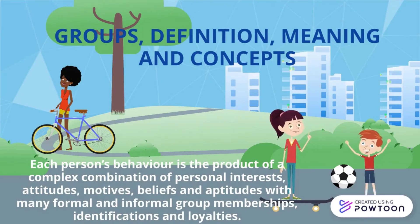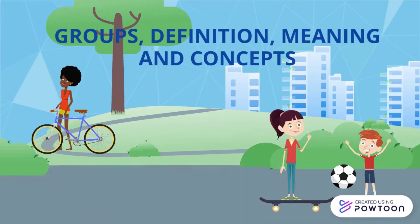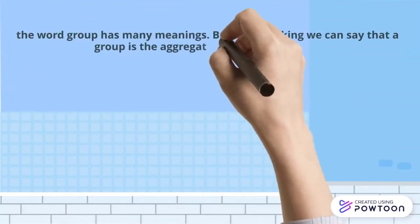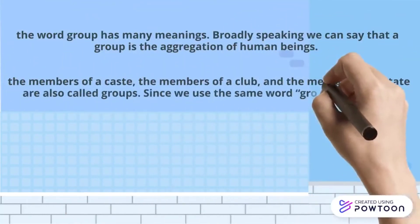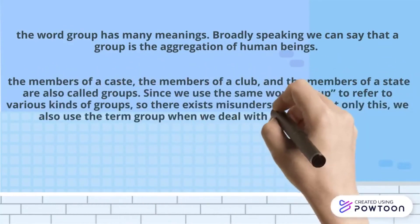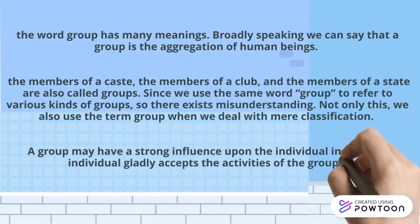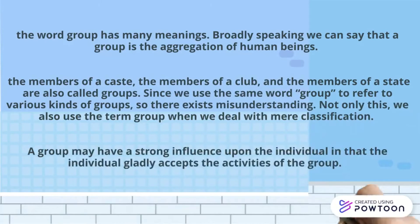Behavior is the product of a complex combination of personal interests, attitudes, motives, beliefs, and aptitudes, along with many formal and informal group memberships, identification, and loyalty. The word 'group' has many meanings. Broadly speaking, a group is the aggregation of human beings. Members of a caste, a club, and a state are also called groups. Since we use the same word to refer to various kinds of groups, misunderstanding exists. We also use the term group when dealing with classification — for example, in a sample survey, we consider people with varying age, gender, education, and socioeconomic status to classify them into different groups. Our group may have a strong influence upon the individual, such that the individual gladly accepts the activities of the group.